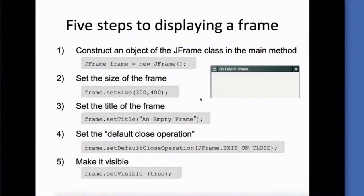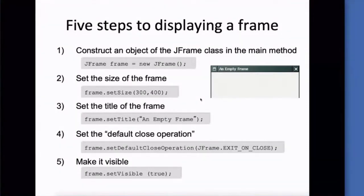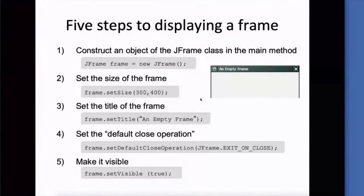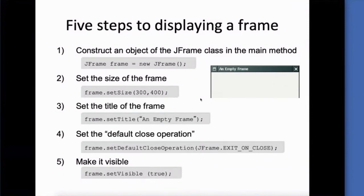What do we want to happen whenever we close this window? Do we want it to just exit or do we want it to continue running in the background? For our situations and just about all of our projects, whenever we close the window, we want that project to stop running. So whenever we click on the X, we'll close down the program. And then the final component is to make it visible. You want to make all of your settings for your frame, including adding things to the frame, before you make it visible. So you're going to add everything to the frame and then the last component you'll do is make it visible.